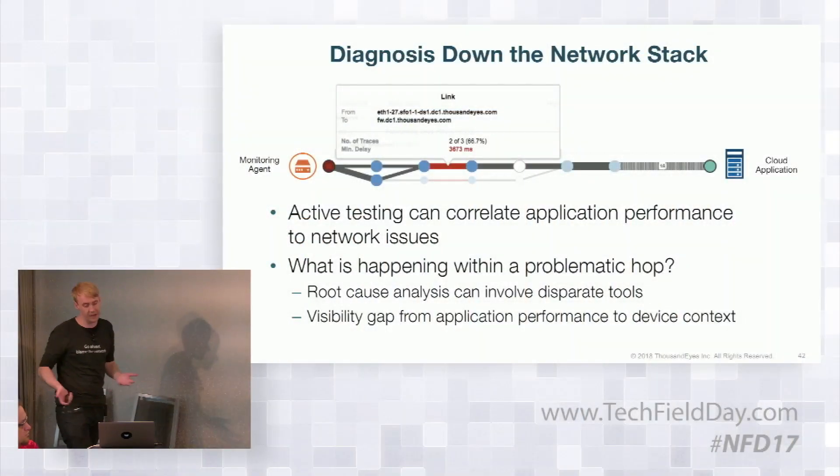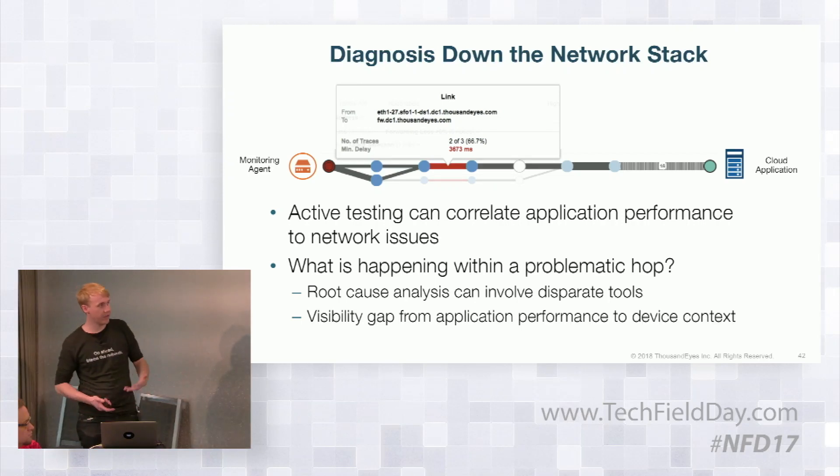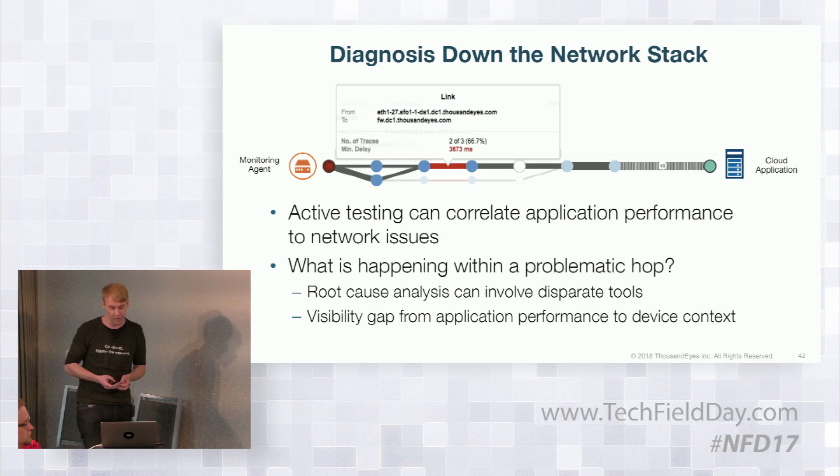I don't think I really need to qualify that network performance and cloud application performance are now very critical things — we can take that as a given. It's possible to measure the performance of applications by active testing. We can distribute agents around the world and probe into the network to see how it's behaving across the internet as a whole.